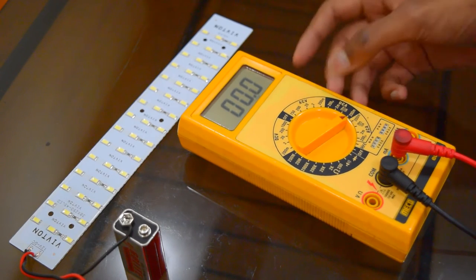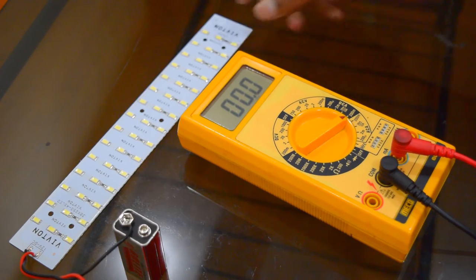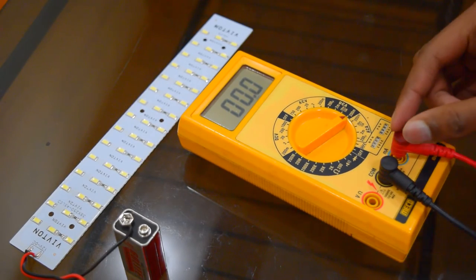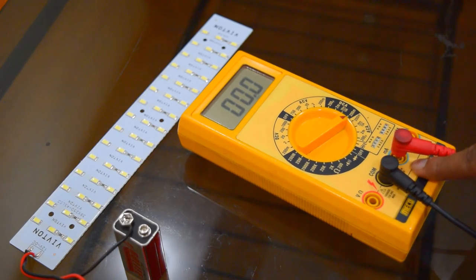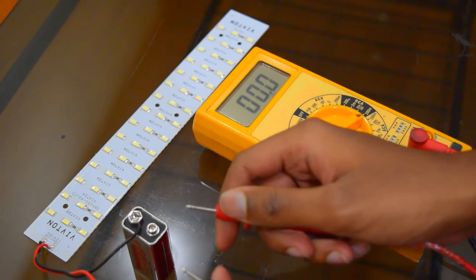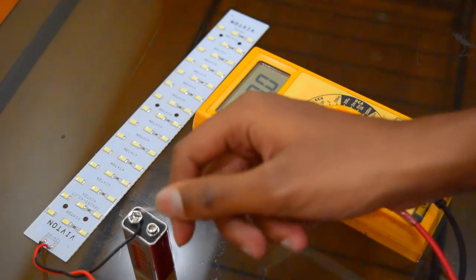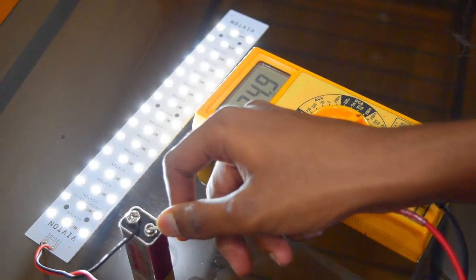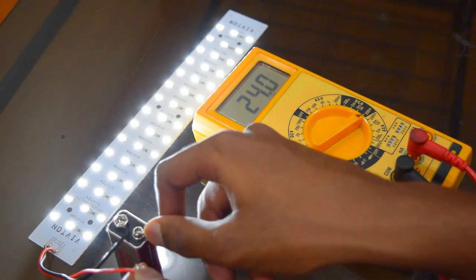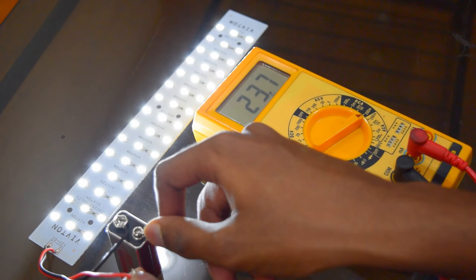Now I'll show you how to measure the DC current. I'll be using this LED strip as a load. Notice that I've changed the probe position from the voltage terminal to the milliampere terminal. Now I'm connecting these probes to the battery in series with the load. You can see the meter is indicating a current rating of 23.7 milliampere.